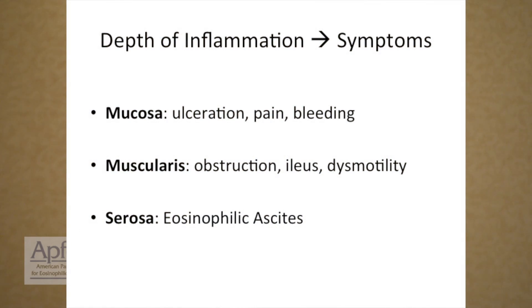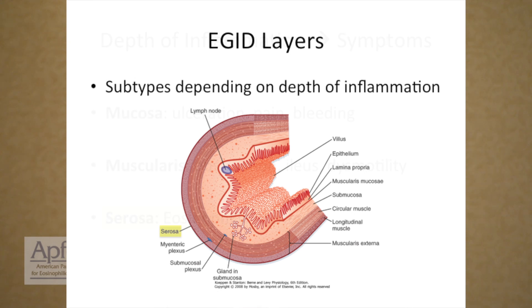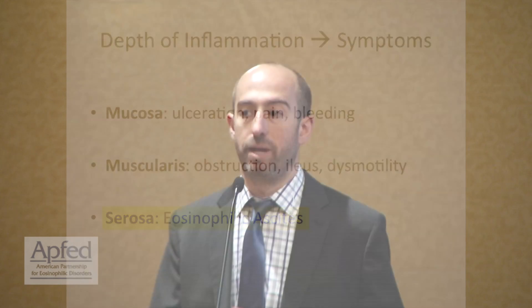Perhaps most dramatically, you can see eosinophilic infiltration in the last layer — the serosa of the bowel — which is in direct contact with the abdominal cavity or the peritoneal cavity. There you can get persistent inflammation that drives a fluid exodus from the bowel into the abdominal cavity. You get eosinophilic fluid buildup — eosinophilic ascites — which can be among the more dramatic presentations of eosinophilic gastroenteritis.